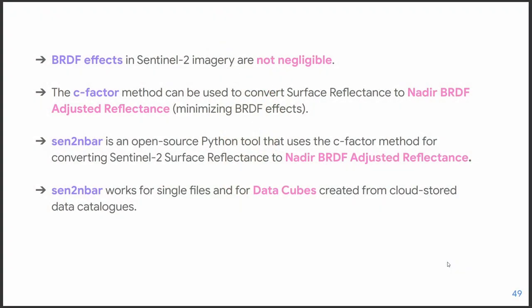So that's all. For the final remarks: BRDF effects in Sentinel-2 imagery are not negligible and we should correct for this. The C-factor method can be used to convert surface reflectance to Nadir BRDF adjusted reflectance and minimize BRDF effects. That's why we developed Send2NBAR — an open source Python tool that uses the C-factor method for Sentinel-2. Send2NBAR works with single SAFE files but also with data cubes created from cloud-stored STAC data catalogs.